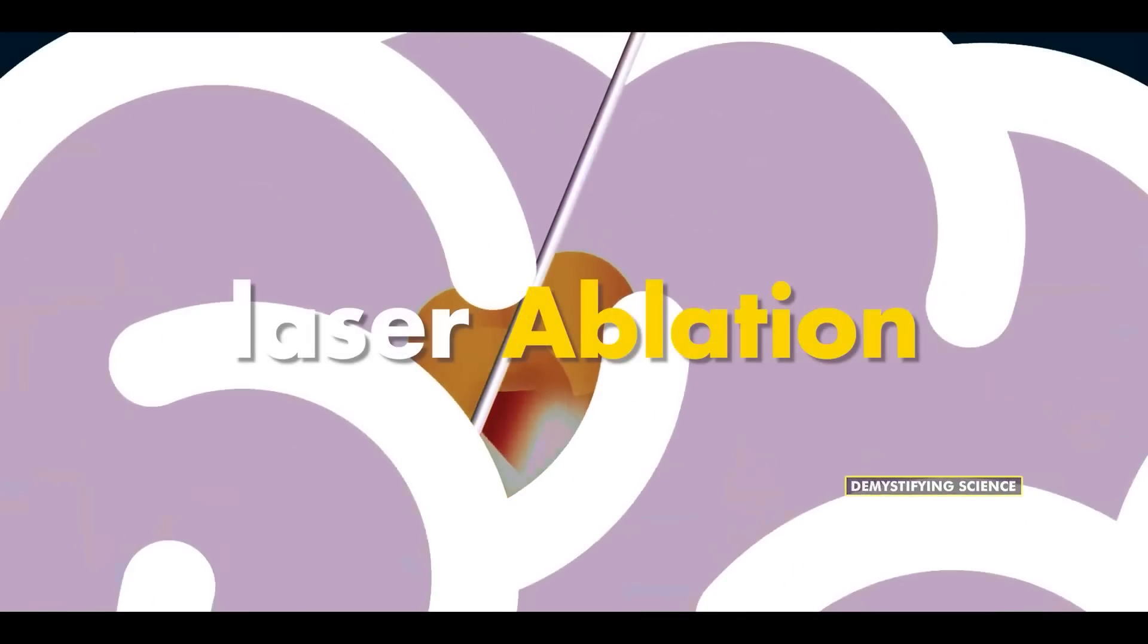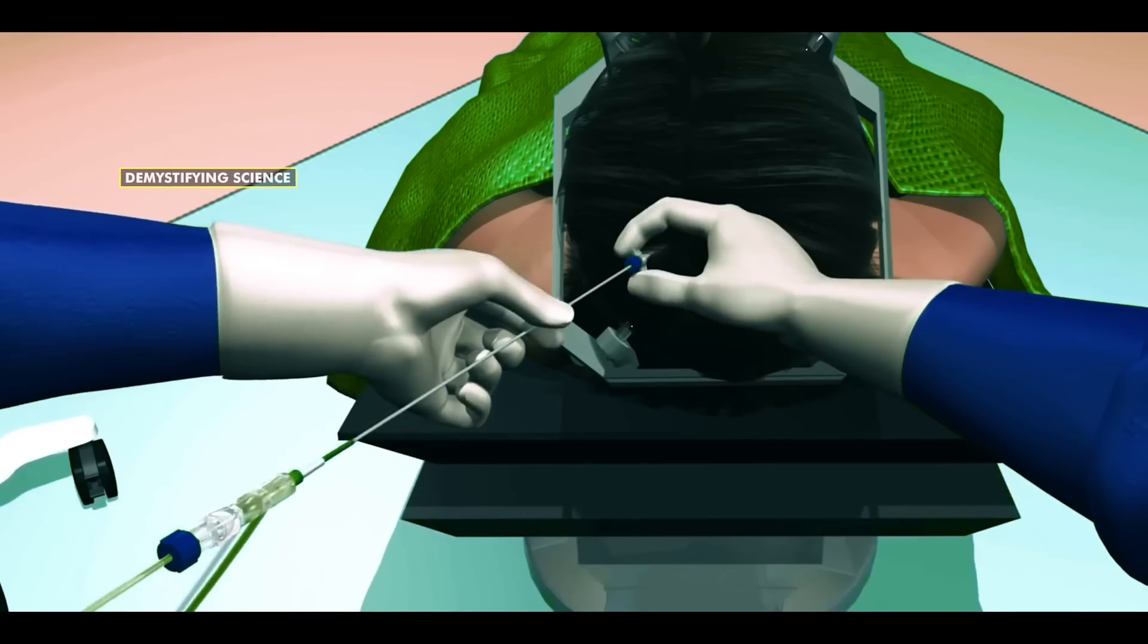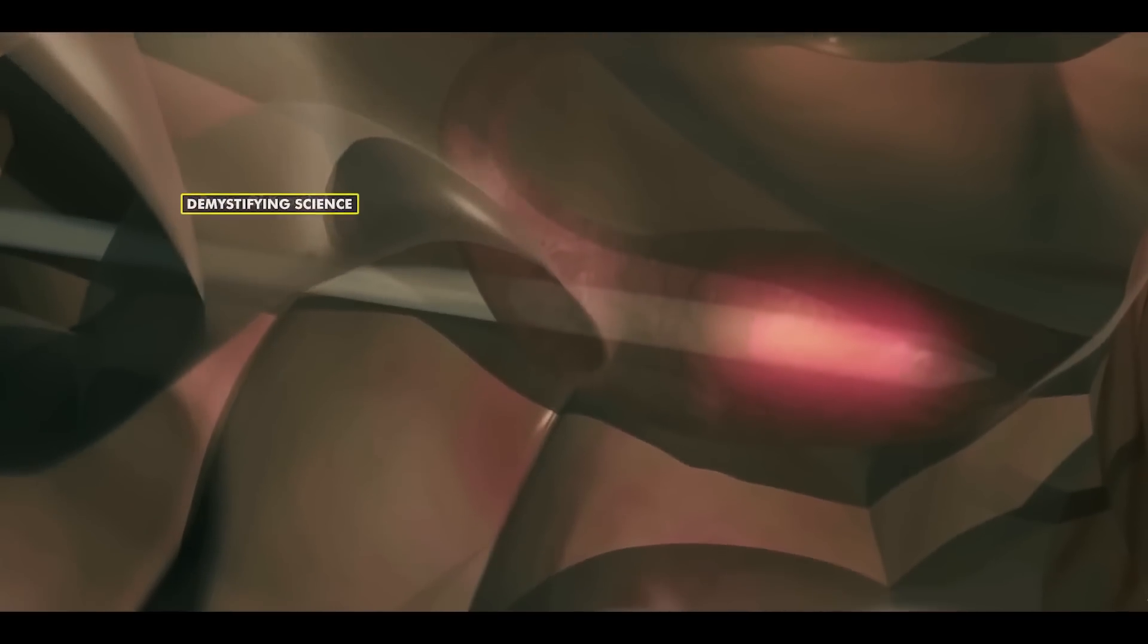Number 3: Laser Ablation. This is another method to treat brain tumors. Laser ablation is a procedure where a thin laser probe is inserted into the brain. Using light and heat, it locates and eradicates the tumor.